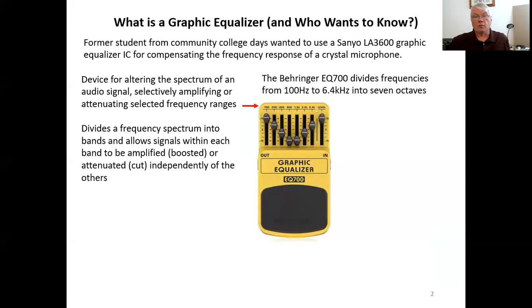It divides a frequency spectrum into bands. It allows signals of each band to be amplified or boosted or attenuated or cut independently of the others. This, for example, is a Behringer EQ700. It divides frequencies from 100 hertz to 6.4 kilohertz into seven octaves. An octave is a factor of two increase in frequency. So the first band is centered at 100 hertz, then 200, 400, 800, and so on.